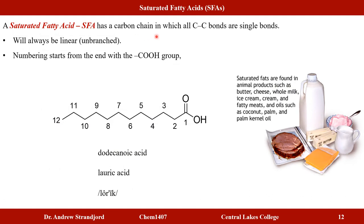Saturated fatty acids have a carbon chain attached to the carboxylic acid consisting entirely of carbon-carbon single bonds, making them linear with no branching. Numbering starts at the carbonyl carbon; a 12-carbon example is dodecanoic acid (IUPAC) or lauric acid (common name). Saturated fatty acids are found in animal products such as butter, cheese, whole milk, fatty meats, and oils like coconut oil, palm oil, and palm kernel oil.